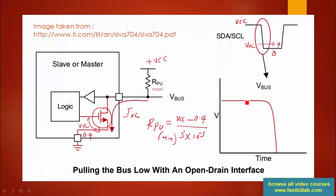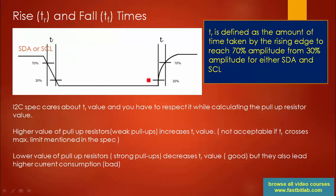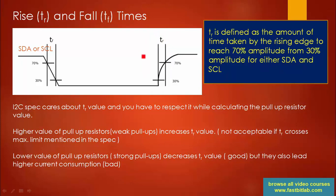Now let's understand what rise time is. Looking at a waveform — which can be either SDA or SCL — TR is the gap between 30% of the voltage level and 70% of the voltage level. TR is defined as the amount of time taken by the rising edge to go from 30% to 70% amplitude for either SDA or SCL. Ideally TR should be zero, but in practice the signal takes a significant amount of time to rise, and that time is denoted by TR.